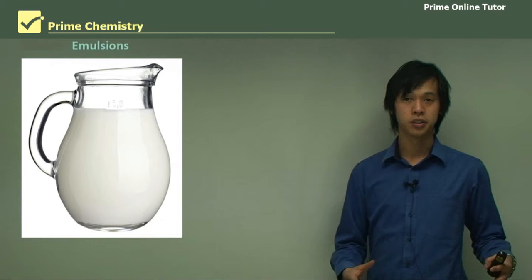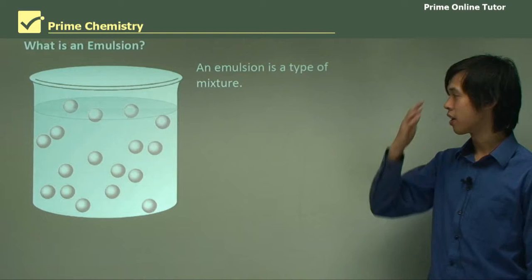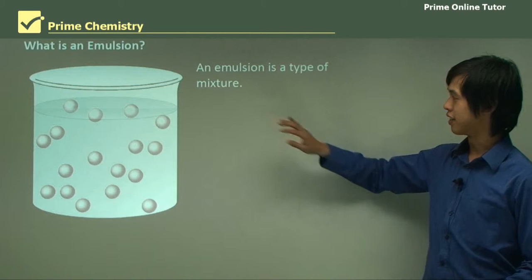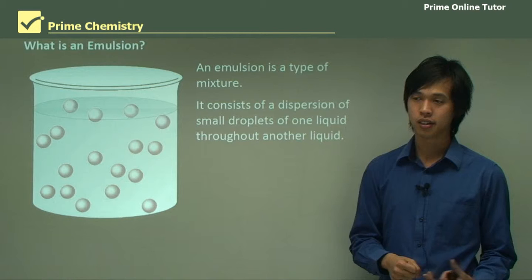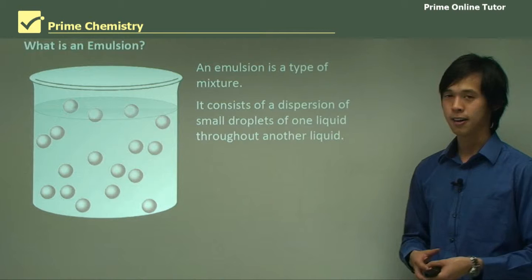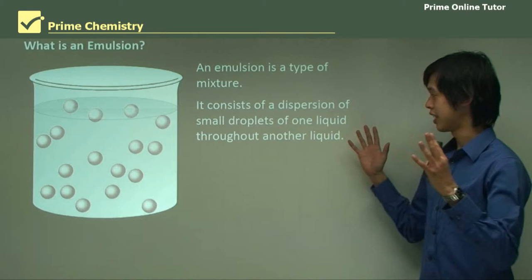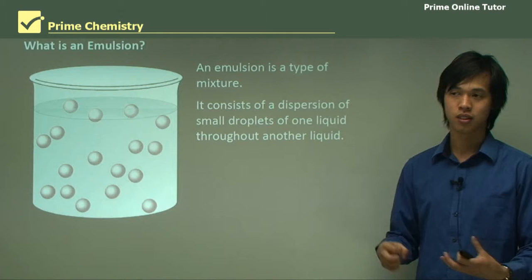The first thing we need to talk about is emulsions. An emulsion is a type of mixture — it has no set composition like all mixtures — and it consists of the dispersion of small droplets of one liquid in another liquid. A common example is oil and water: if you can get the oil to become droplets, then it's an emulsion of oil and water.